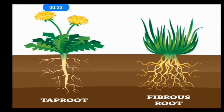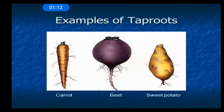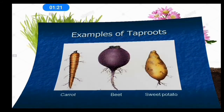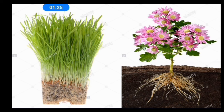What is tap root? When a single thick main root grows below the stem, it is called tap root. What is fibrous root? When a bunch of many thin and bushy roots grow below the stem, it is called fibrous root. Let's see some examples: examples of tap roots are carrot, beetroot and sweet potato. Examples of fibrous roots are grass and marigold plant.